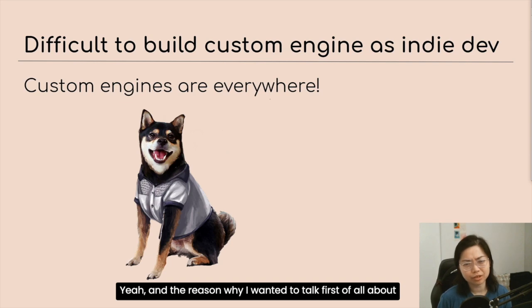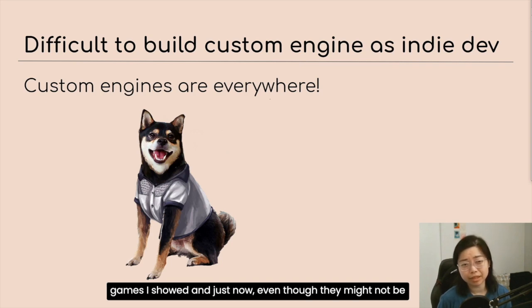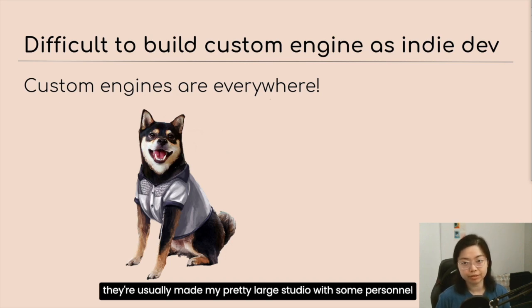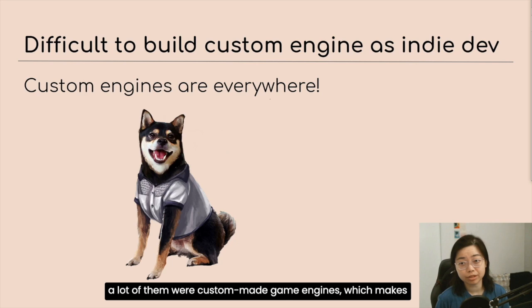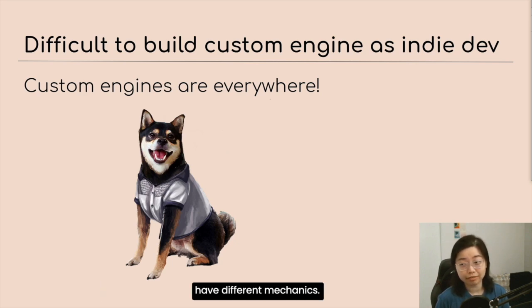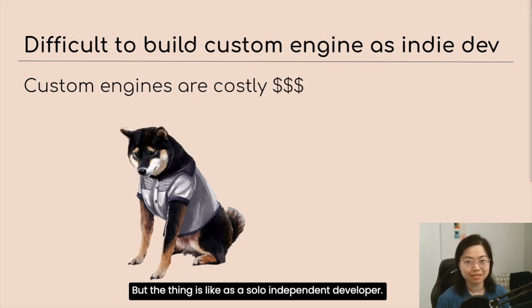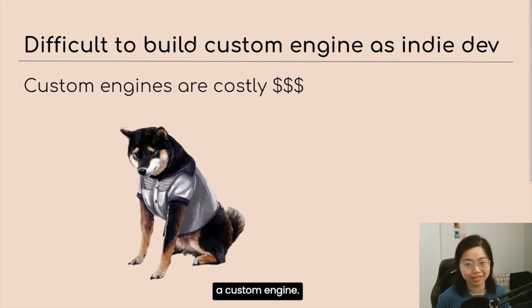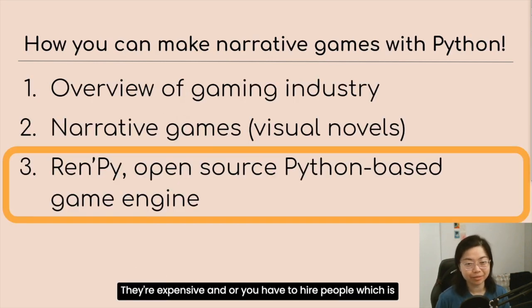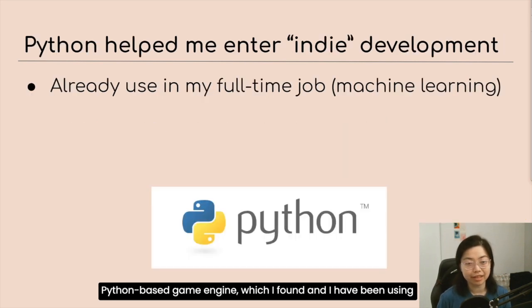The reason I talked about AAA studios and indie games first is that a lot of those narrative games, even if not as massive as Ubisoft, are usually made by pretty large studios with some personnel and budget. When I researched what engines they used, a lot were custom-made game engines, which makes sense — they might mix 3D and 2D with different mechanics, and they have teams of many developers who can build custom engines. But as a solo independent developer, I cannot develop a custom engine. They're expensive, and hiring people is also expensive. So here enters RenPy, which is an open sourced Python-based game engine that I found and have been using for a long time.